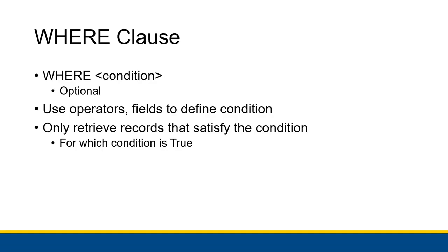Now let's talk about the WHERE clause. It is a completely optional clause in a SELECT statement, written after you've specified the fields and table. WHERE lets you specify a condition to determine which rows are actually going to be included. This condition uses operators and values from fields to define what records you're going to retrieve — you retrieve the records for which the condition is true.